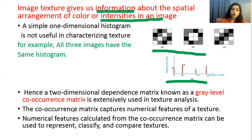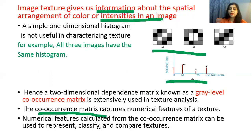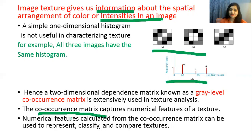The co-occurrence matrix captures numerical features of texture. Numerical features are calculated from the co-occurrence matrix that can be used to represent, classify, and compare different textures available in the image.